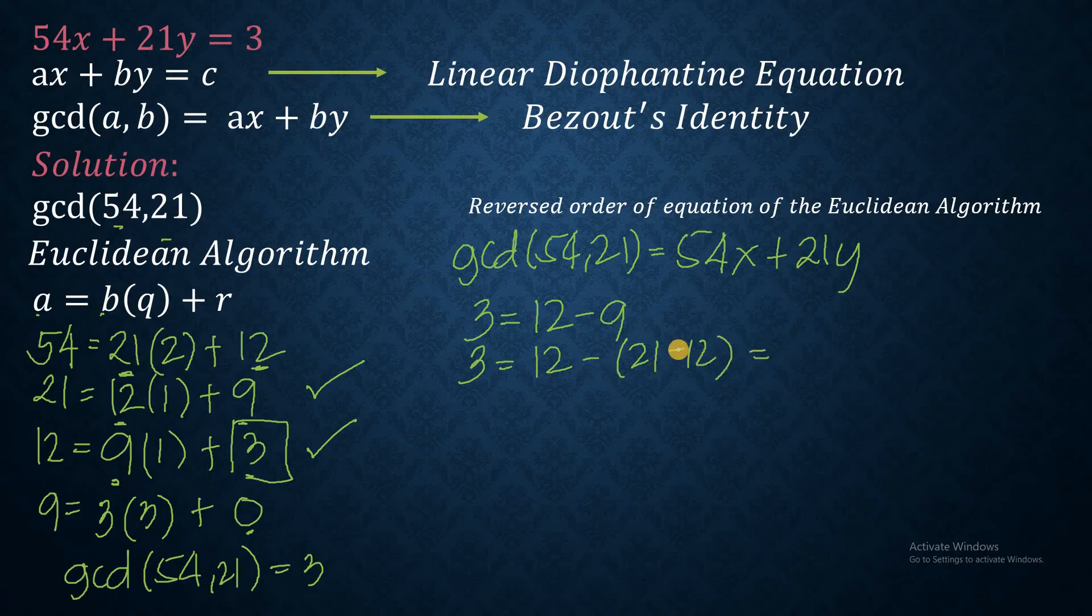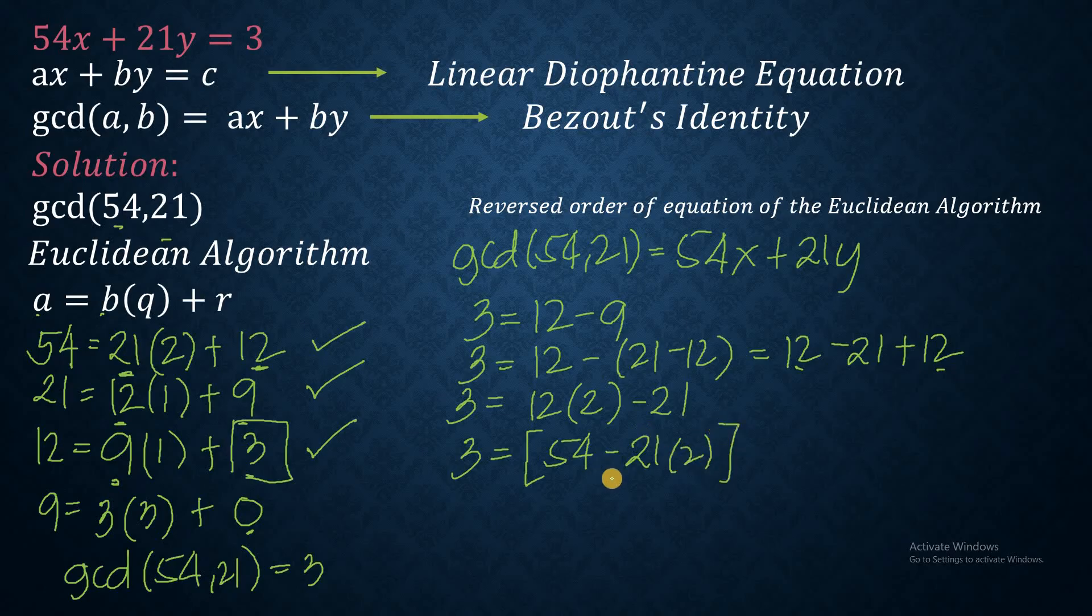We can simplify this by distributing the negative sign. So we have 12 minus 12 minus 21 plus 12. We can factor out 12. So this is equals 3 is now equal to 12. We factor that out, and we have 1 and 1. So that becomes 2, and followed by a minus 21. Then the last order of equation, we define 12 is defined as 54 minus 21 times 2. That is 12, which is multiplied by 2. So that's 4 times 2, then minus 21. Then 2 times 2 is 4, followed by a negative 21.